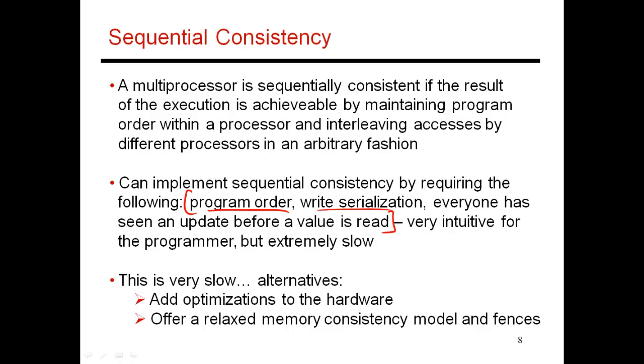So each thread must preserve program order. Then you must do write serialization, and you must make sure that everyone has seen an update before someone is allowed to read that value. So these two are providing write atomicity. So far, we've already designed cache coherence protocols that provide write serialization, and that make sure that you have an acknowledgment so that everyone sees a write before someone else does a read. So we don't need to worry about these two conditions, because they're already being taken care of for free by the cache coherence protocol. But in addition to that, we do have to provide this program order condition.